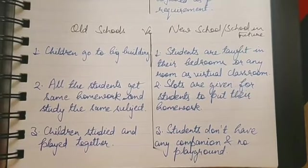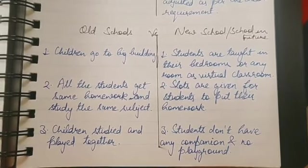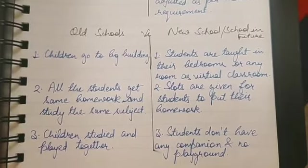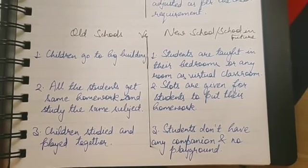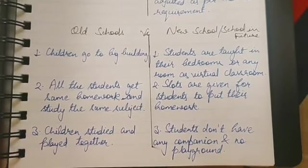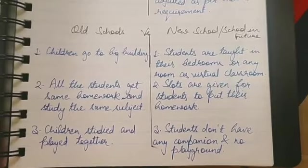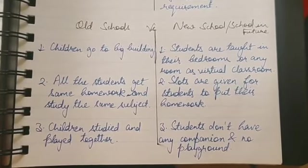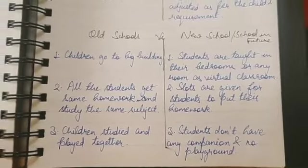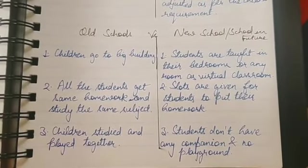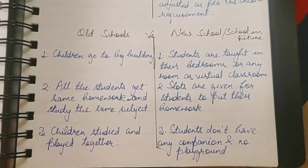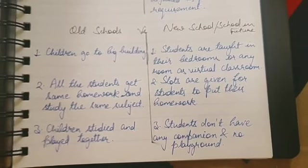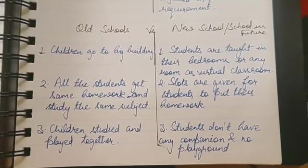The second difference: in old schools, all students get the same homework and study the same subject. In the school of the future, slots are given for students to submit their homework — particular hours or time slots are assigned, and students must submit their homework within that given time.